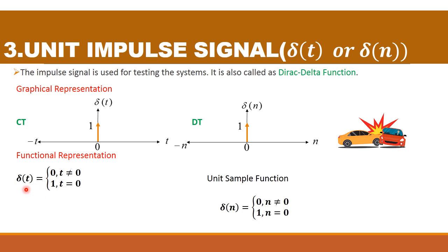The functional representation is: δ(t) = 0 for t ≠ 0, meaning for all remaining values of t its value is 0 — for positive and negative values of t the value is 0, and we have a value only at t = 0. So δ(t) = 1 for t = 0. For the discrete case, the unit impulse signal is called the unit sample function: δ(n) = 0 for n ≠ 0, and δ(n) = 1 for n = 0.